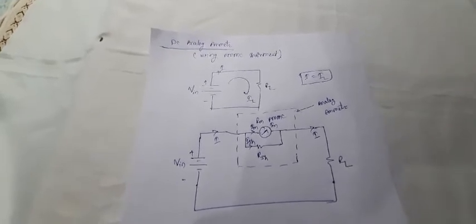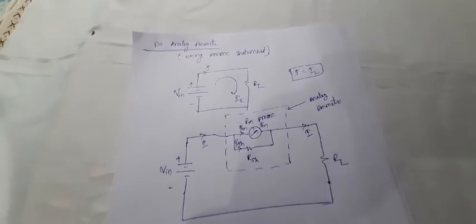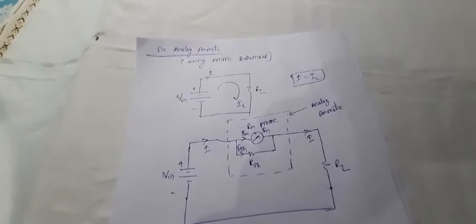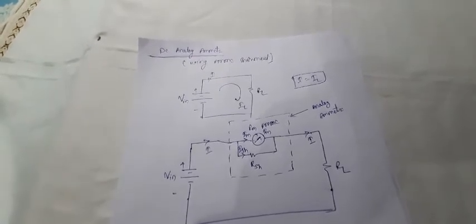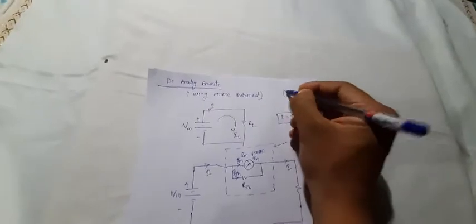Hello friends. Now we will see how to implement a DC analog ammeter and DC analog voltmeter using a PMMC instrument. We know about the PMMC instrument — this is its symbolic representation. It has two parameters: IM, which is the full scale deflection current, and RM, which is the resistance of the winding or coil.